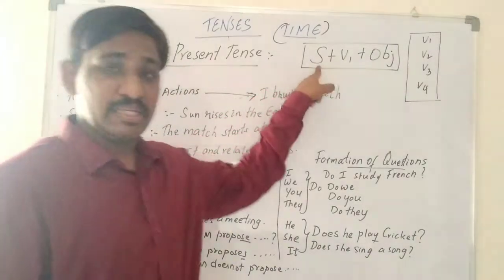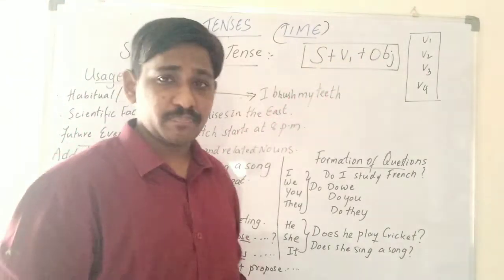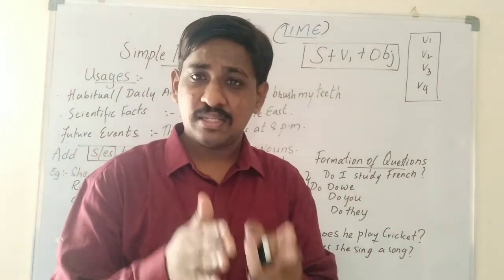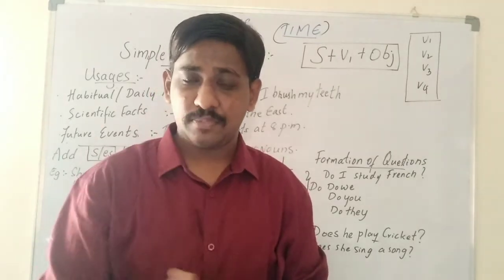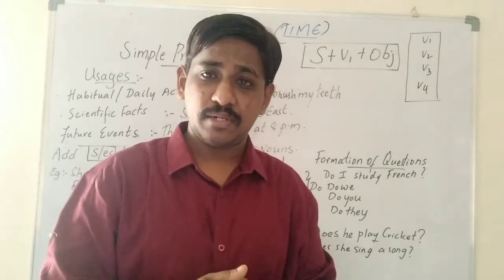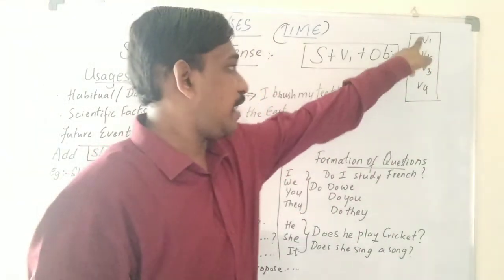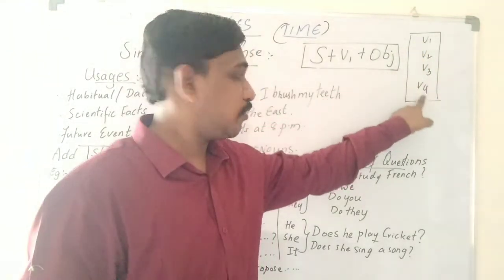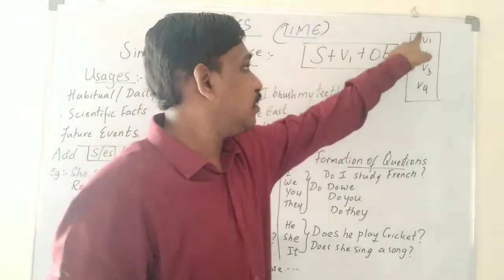The formation is: subject plus verb form one plus object. What is verb form one? For example: sit, sat, sit, sitting. See: saw, seen, seen. Write, wrote, written, writing. Write is V1, wrote is V2, written is V3, writing is V4. V4 is the -ing form — always -ing will be there with V1.